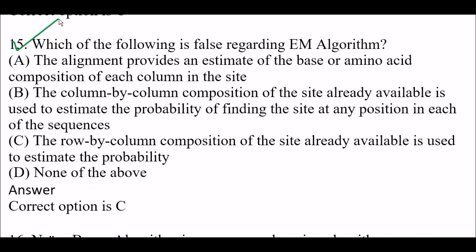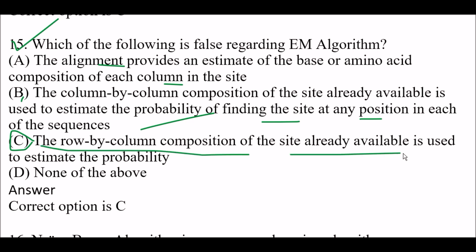Next question: Which of the following is false regarding the EM algorithm? Option A: The alignment provides an estimate of the base or amino acid composition of each column in the site. Option B: The column-by-column composition of the site already available is used to estimate the probability of finding the site at any position in each sequence. Option C: The row-by-column composition of the site already available is used to estimate the probability. Option D: None of the above. Right answer is Option C.